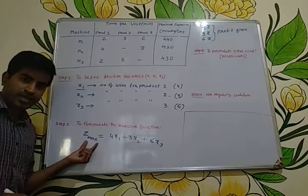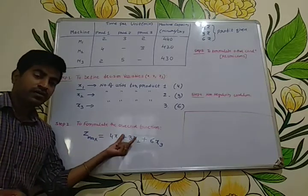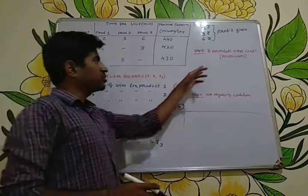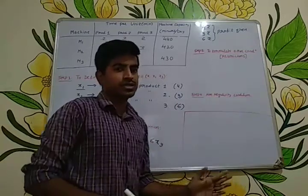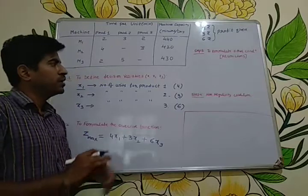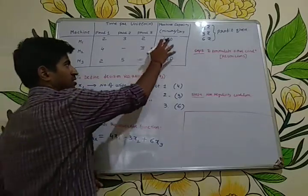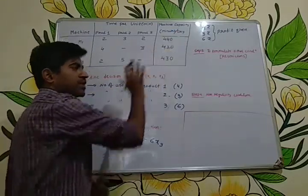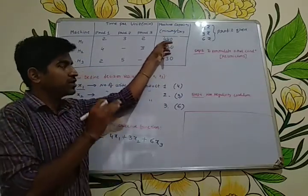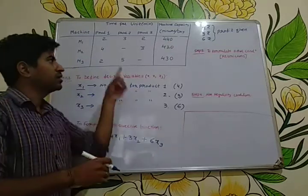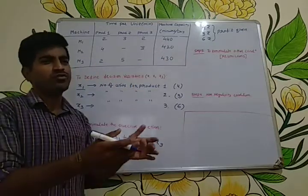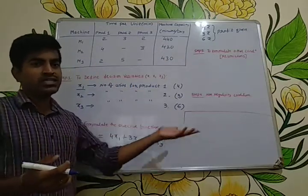We need to maximize whenever profits are given. Whenever costs are given, you need to minimize. Coming to the third step, which is to formulate the other conditions — also called restrictions or constraints. The constraints here are the machine capacities, because machine M1 can only be used 440 minutes per day and machine M2 only 420 minutes — not beyond that.